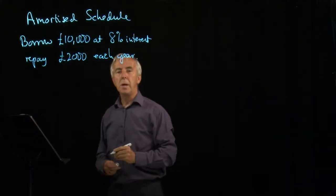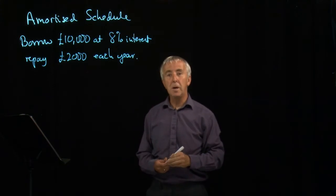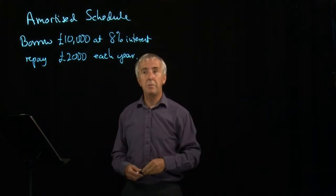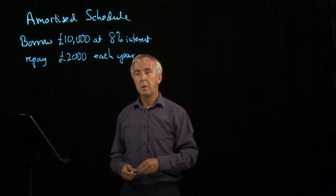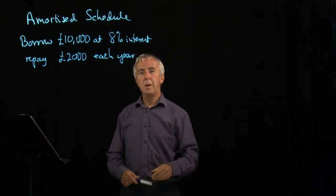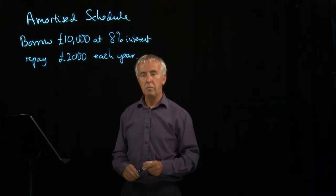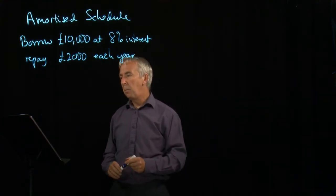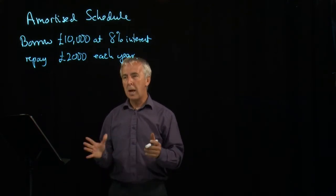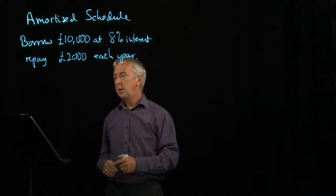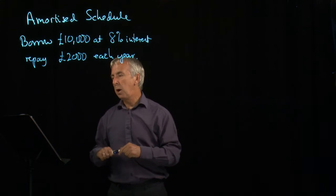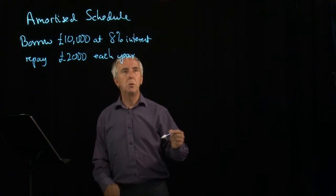You might think that after five years we've paid it off — we've paid back £10,000. But we have to pay the interest as well, and that makes the calculation rather more complicated. The way that we can see what happens is by drawing up a table called the amortised schedule.